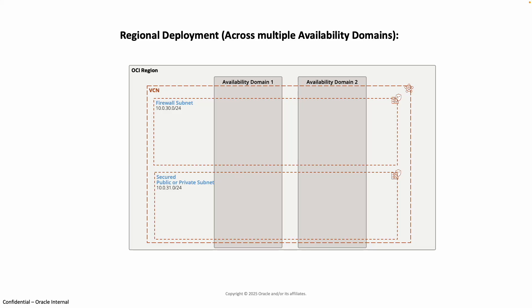Regional Deployment spans across multiple Availability Domains. This diagram shows a dedicated firewall subnet spanning across two Availability Domains within a single Oracle Cloud Infrastructure Region. The Active Firewall is located in Availability Domain 1, and the Standby Firewall is located in Availability Domain 2.